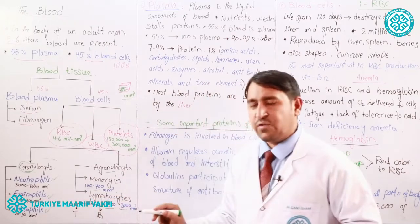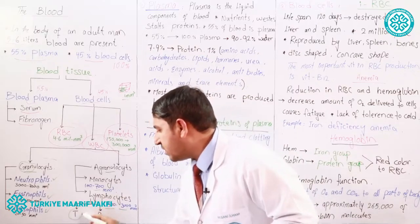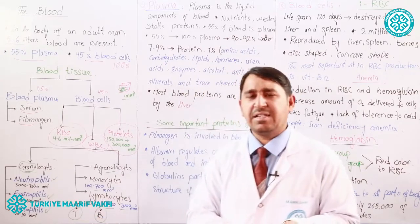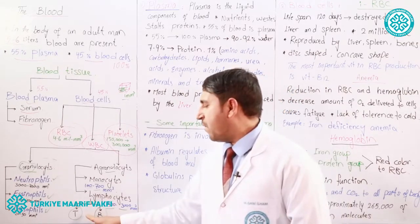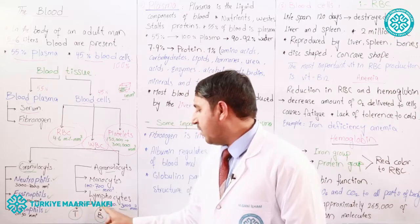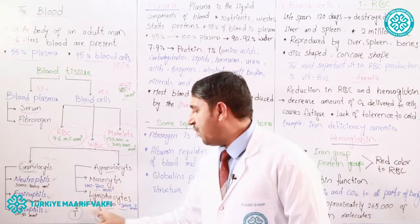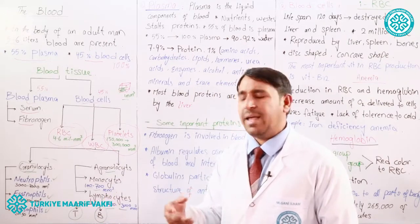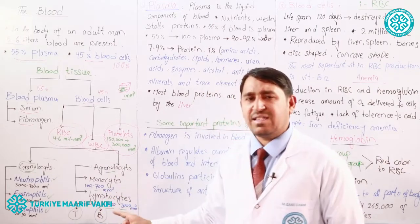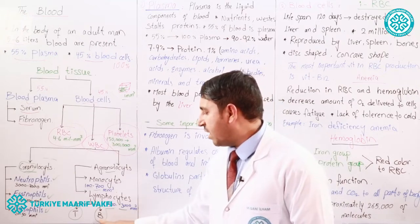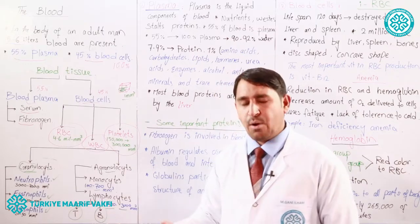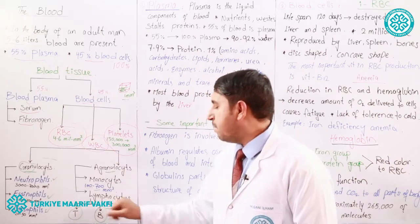Lymphocytes have two types in the WBC: T lymphocytes and B lymphocytes. T lymphocytes are made in a gland located in our chest called the thymus gland — from 'thymus' we take the 'T'. B lymphocytes are made in our bones — from 'bones' we take the letter 'B'. So B lymphocytes are produced in our bones and T lymphocytes in our thymus gland.